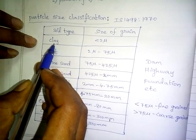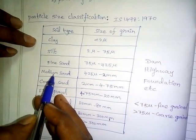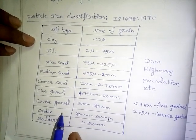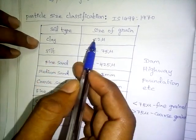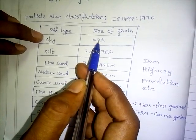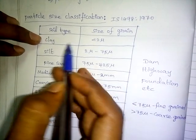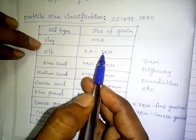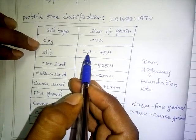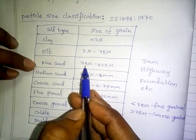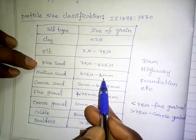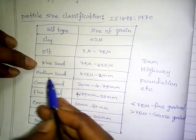Based on grain size, soils are classified as: clay (less than 2 microns), silt (2 microns to 75 microns), fine sand (75 to 425 microns), and medium sand (425 microns to 2 mm). Each size range defines a distinct soil particle type.